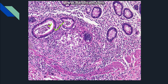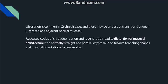Also very characteristic of Crohn's disease is the presence of non-caseating granuloma. Ulceration is common with an abrupt transition between the ulcerated part and the adjacent normal mucosa. Because of repeated cycles of crypt destruction, ulceration, and regeneration, the normal mucosal architecture becomes distorted — crypts that are normally straight and parallel take on bizarre shapes and orientations.